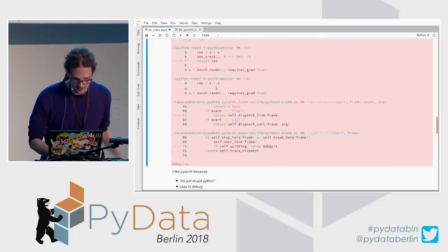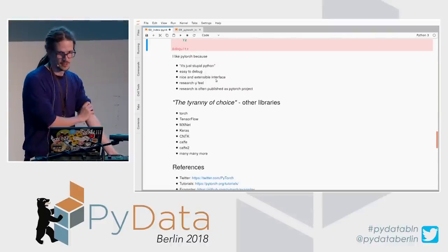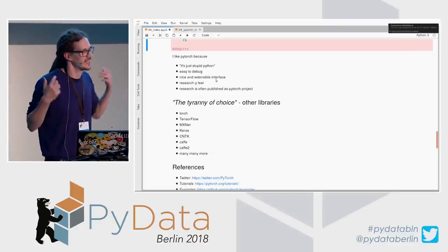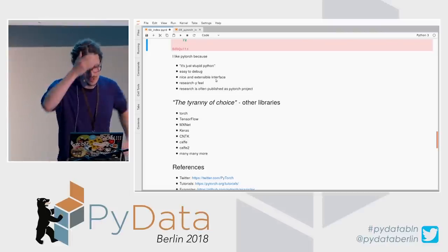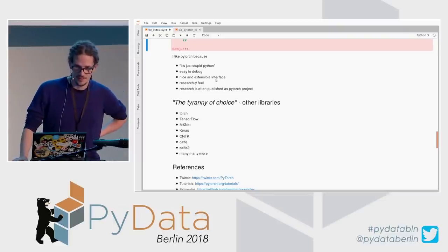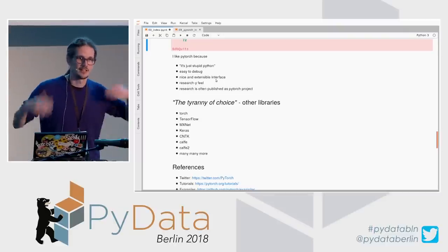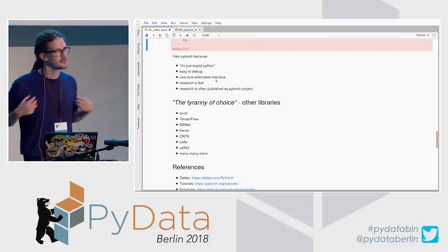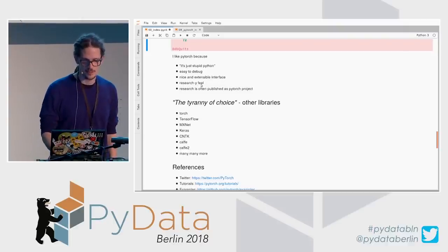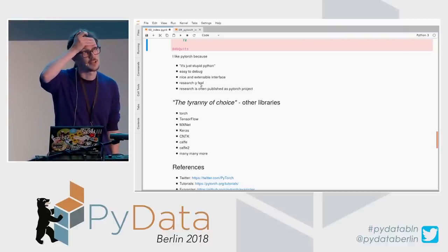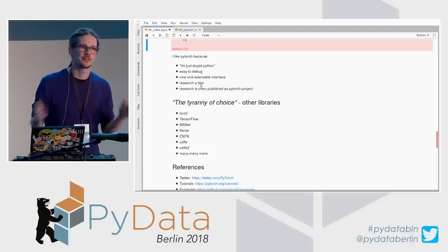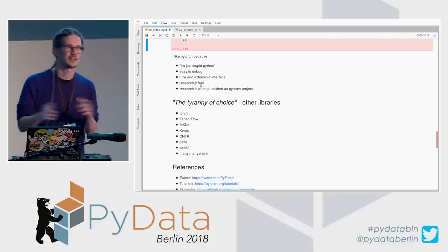We're going to go more into debugging later — that was just a teaser. I like PyTorch because it's just plain Python. I don't have to think about it; I'm just doing Python. It's easy to debug, it has a few classes with very simple interfaces that I immediately understand, and quite a lot of research is published in PyTorch. If you're reading papers, quite often there's a PyTorch implementation. If there's only a TensorFlow implementation, you just wait a week and then there's a PyTorch implementation.